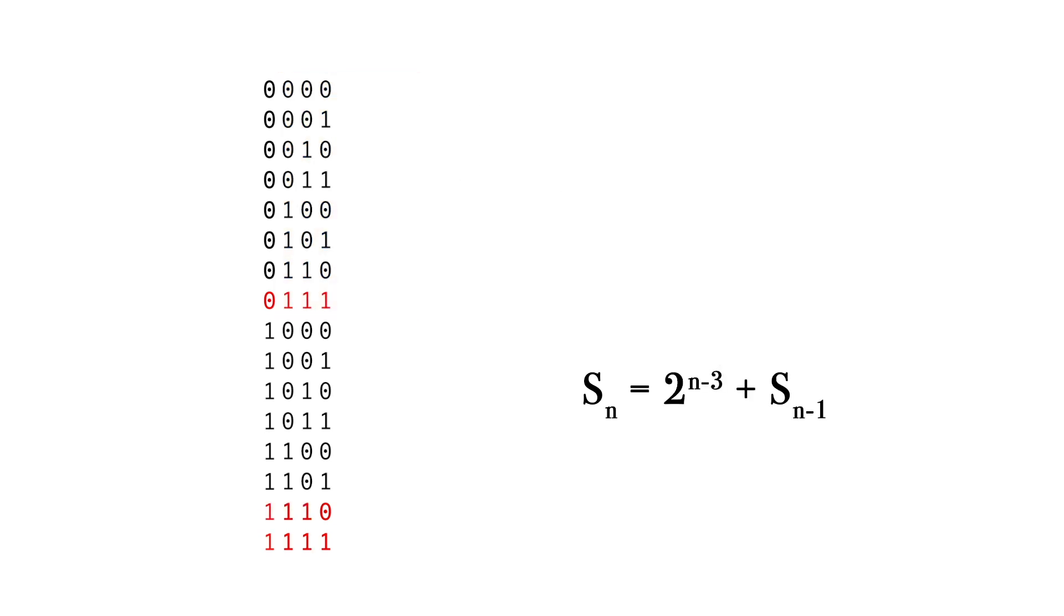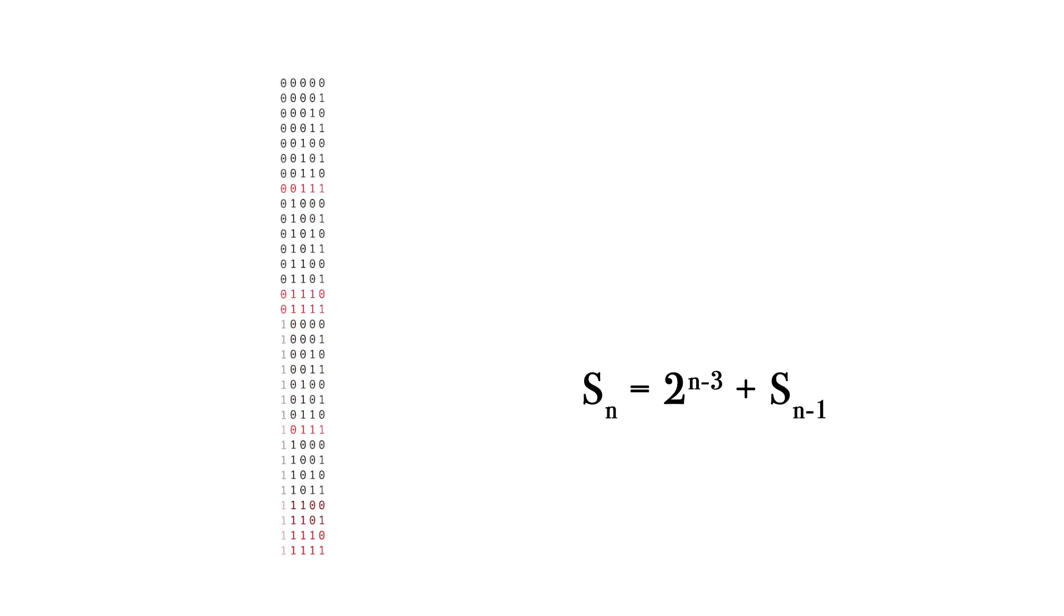You can probably guess that this is not the end. Five digits. One more improvement to our formula. In the upper half of the sequences that start with 1, we can see the bad sequences that were found one step before the previous.